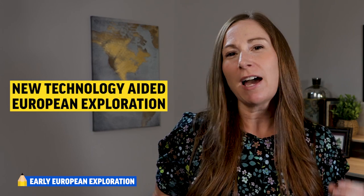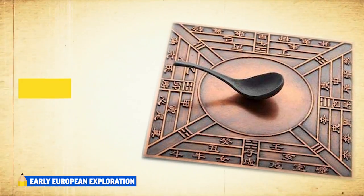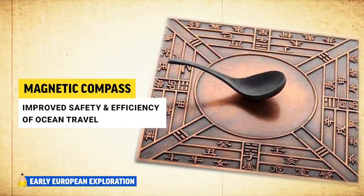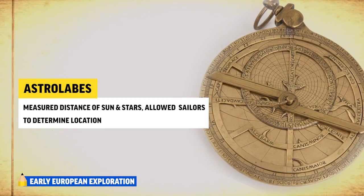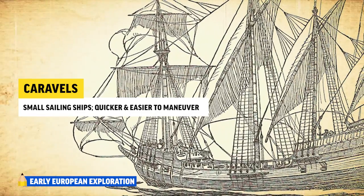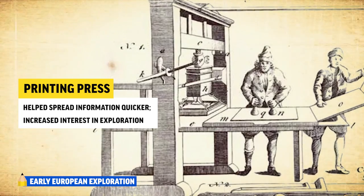Let's talk about early European exploration. New technologies allowed Europeans to engage in the age of exploration. The magnetic compass, adapted from China, improved the safety and efficiency of ocean travel. Astrolabes measured the distance of the sun and stars, allowing sailors to determine their location. The Portuguese invented caravels — small sailing ships that were quick and easy to maneuver. And the printing press helped spread information faster, increasing interest in exploring the world.